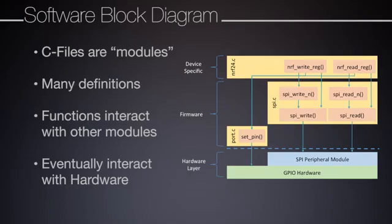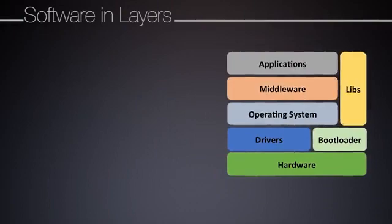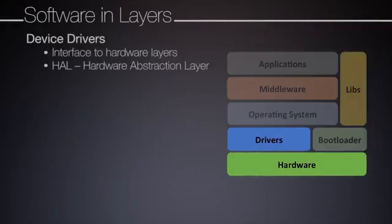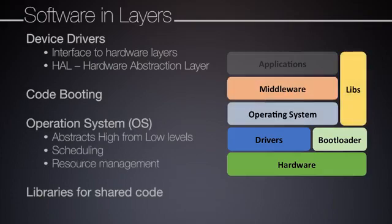An example of a typical software organization can be seen with an OS-based design. There are low-level device drivers that interact with hardware. There is software to help boot or start the system, an operating system to schedule processes and manage resources, shared libraries that many software components use, and finally, the higher-level software reflects user applications.